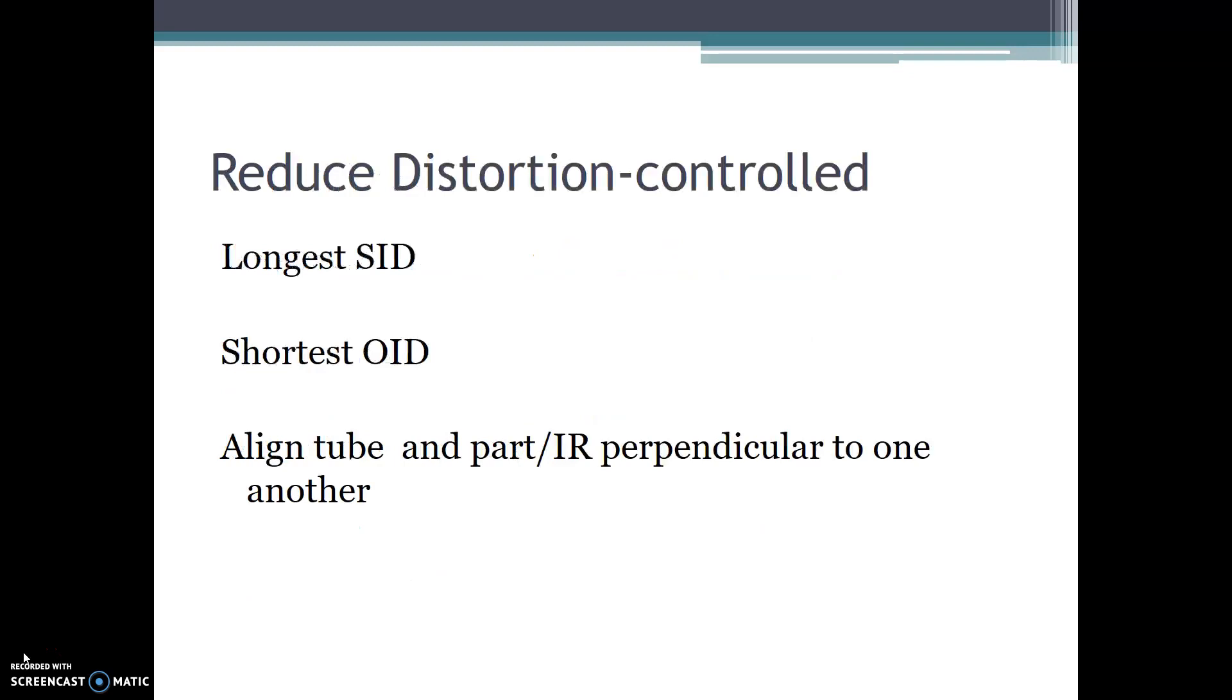In order to reduce distortion, we want the longest SID and the shortest OID. We need to align the tube and part and image receptor perpendicular to one another.